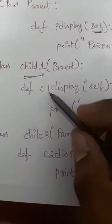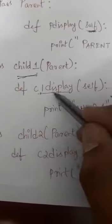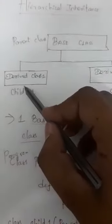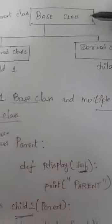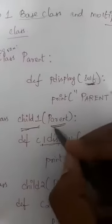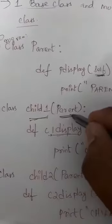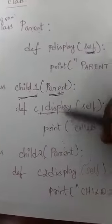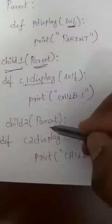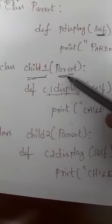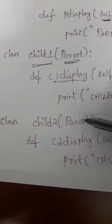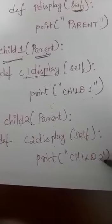Inside child one I am declaring a method called 'c1_display', and inside it I am printing 'child one'. Child one is acquiring properties from the parent class, and child two is also acquiring properties from the parent class. So for both child classes you need to pass 'parent' as the argument. Inside child two I am declaring a method called 'c2_display' and printing 'child two'.